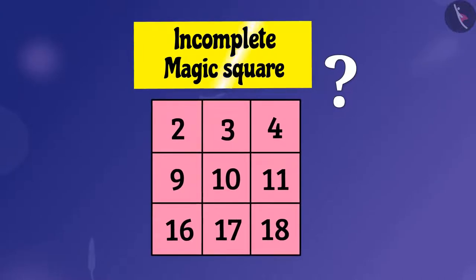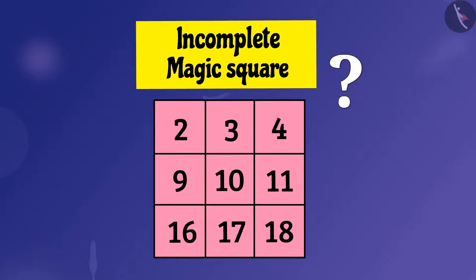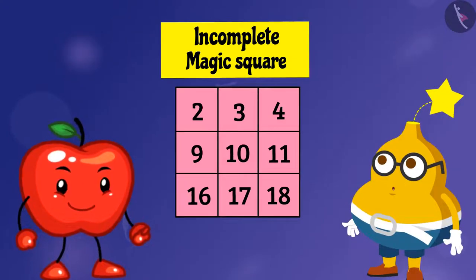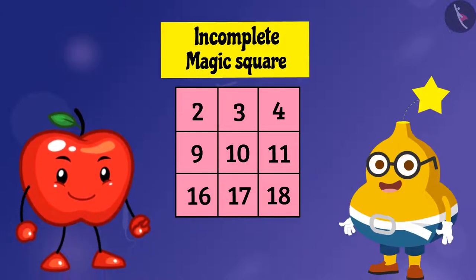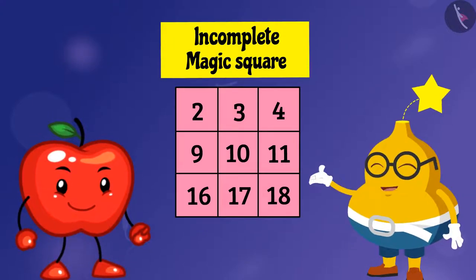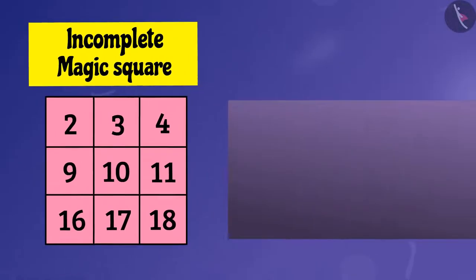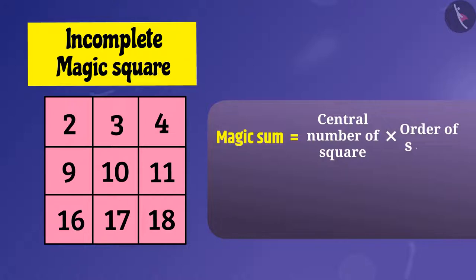Do you think Api has given the right answer to this puzzle? After hearing Api's answer, Fruity says: amazing, your answer is right! Do you know that in such an incomplete magic square one can find the magic sum by multiplying the central number of the square by the order of the square? Isn't it interesting?